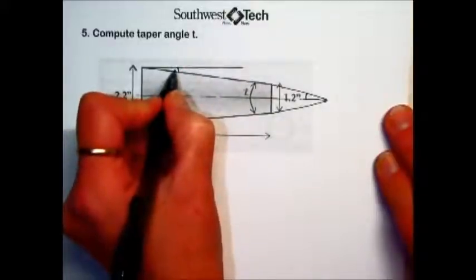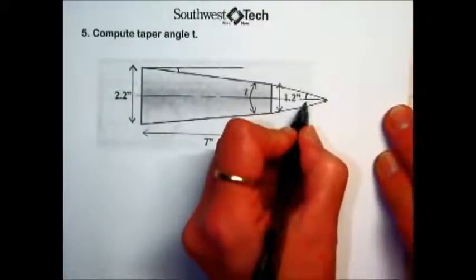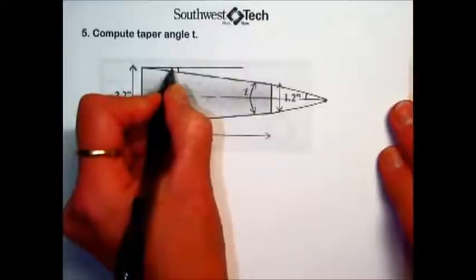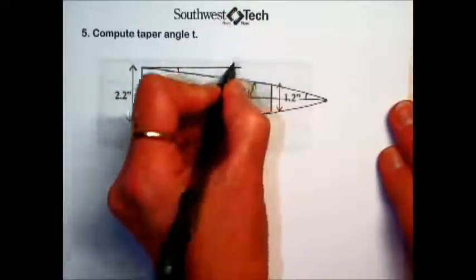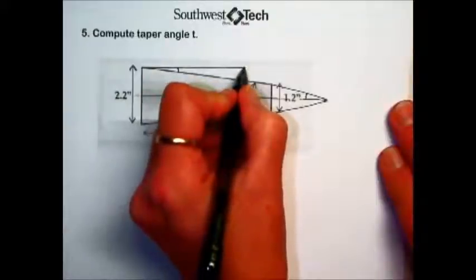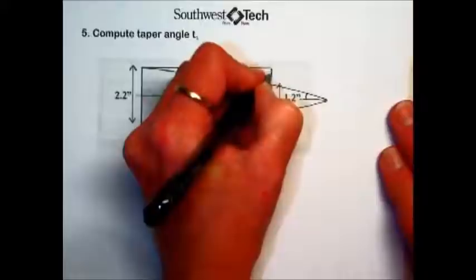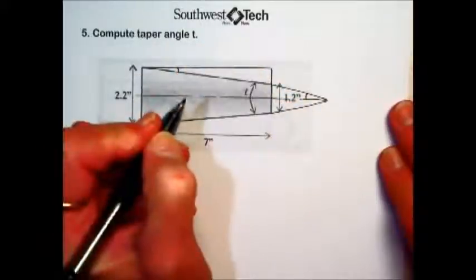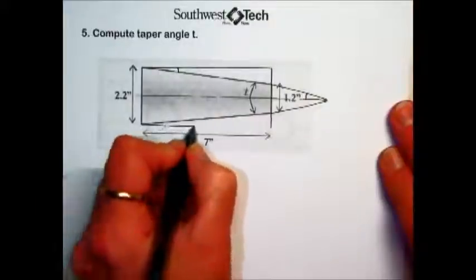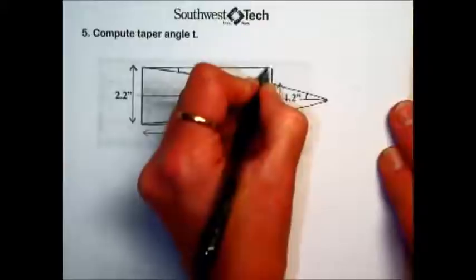I want to find the measure of this angle here, which will be half of the taper angle that I'm looking for. Well, I have right triangle trigonometry to help me, but I need a right angle. So I'm going to bring this out only to the right end of our taper and square it off. And I could do the same thing at the bottom.